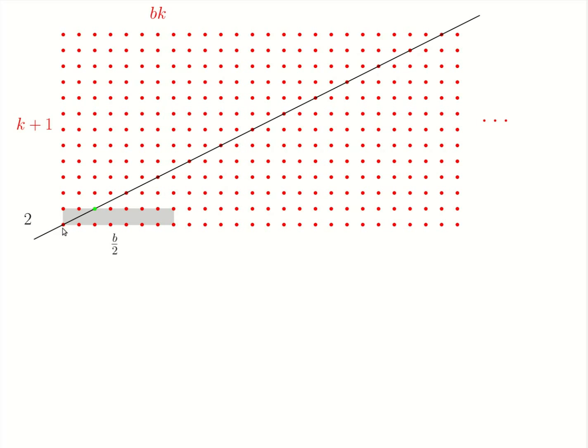We can start by looking at the origin and connect it to a point that lies on the top edge of a 2 times b over 2 rectangle, and then extend this line to infinity.